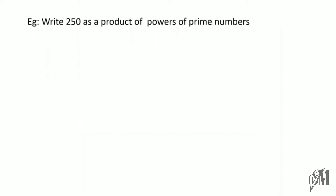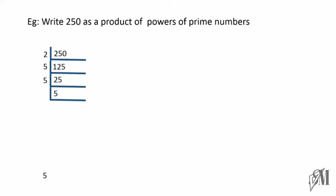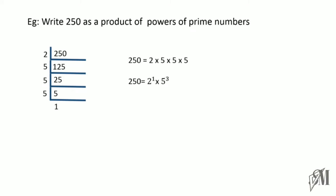Let us move on to another example: write 250 as a product of powers of prime numbers. We start dividing 250 by 2 and get 125. Then it can be divided by 5 to give 25, again by 5 to give 5, and again by 5 to give 1. So 250 can be written as 2 into 5 into 5 into 5, which gives you 2 times 5 to the power 3.